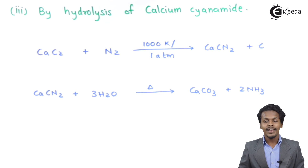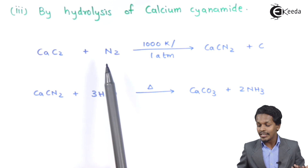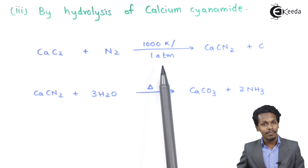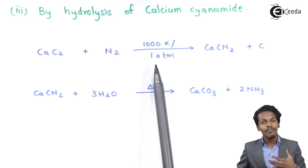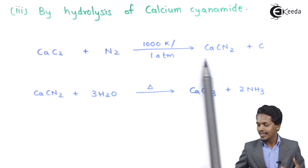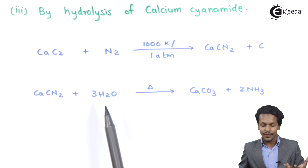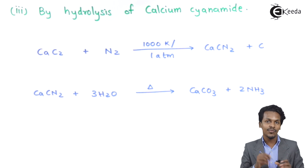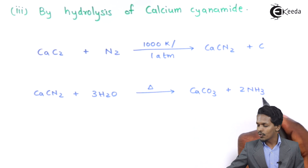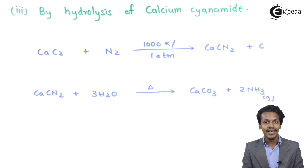Another method to prepare ammonia is by hydrolysis of calcium cyanamide. As discussed in a previous lecture, calcium cyanamide is produced when calcium carbide is treated with nitrogen at high temperature and high pressure — here at around 1 atmosphere. At lower temperatures, we increase the pressure to obtain calcium cyanamide along with carbon. This calcium cyanamide is then hydrolyzed in the presence of water at high temperature, giving a byproduct and the main product, NH3. These were the different methods from which we can prepare and obtain ammonia.